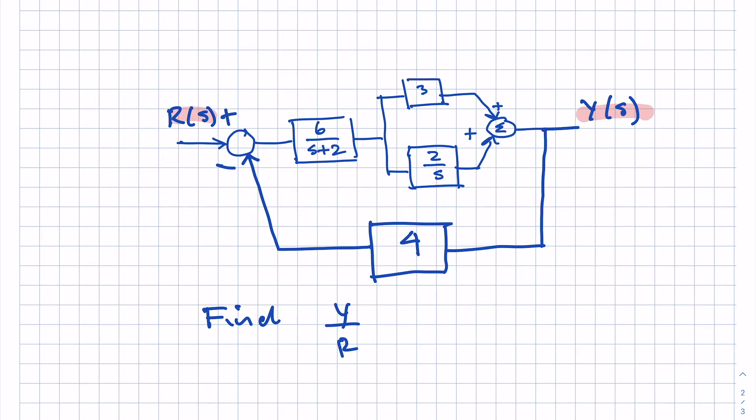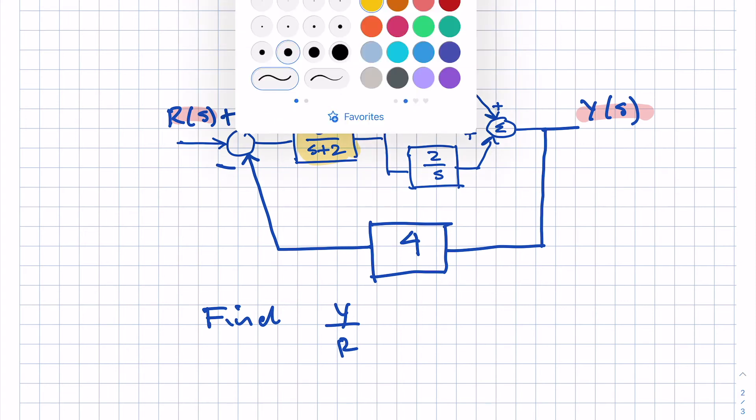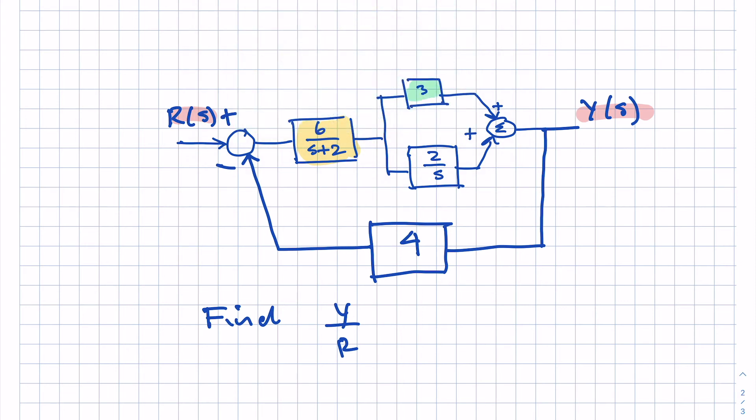So I get started by looking for patterns. What I see here is an initial transfer function, 6 over S plus 2. And then that's in series with this parallel combination. So the green part is the parallel combination. If I reduce the parallel combination to something that it simplifies to, then I would have the green transfer function, the overall green transfer function. Let me just make that whole thing a big block cascaded with the yellow.